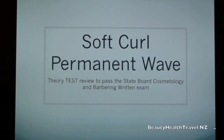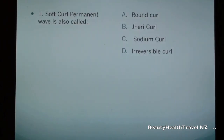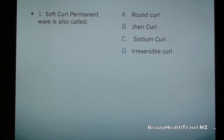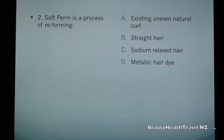Soft curl permanent wave theory test review to pass the state board cosmetology and barbering written exam. Question 1: A soft curl permanent wave is also called: a) round curl, b) jerry curl, c) sodium curl. Question 2: Soft perm is a process of reforming an existing uneven natural curl.